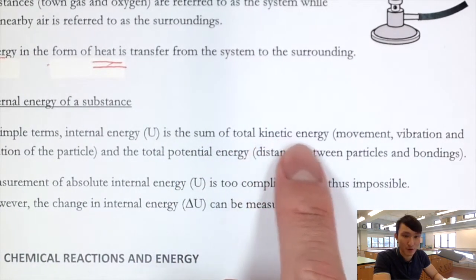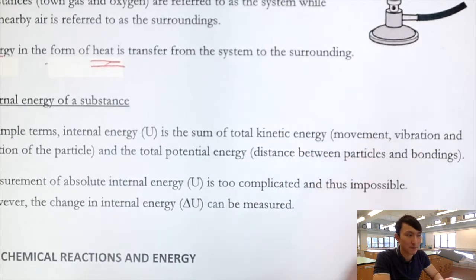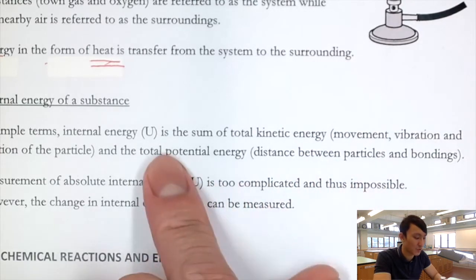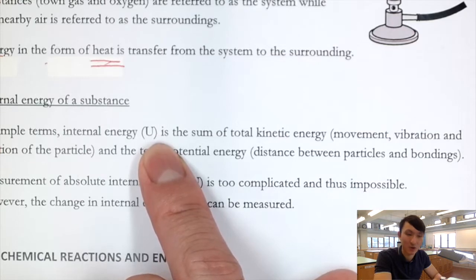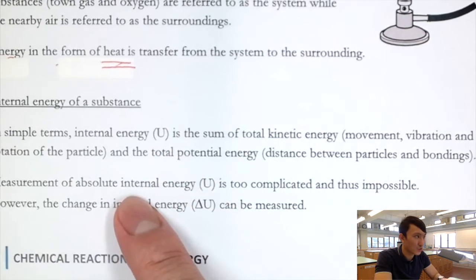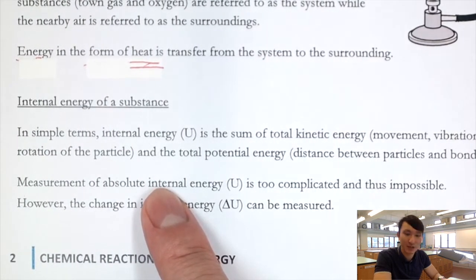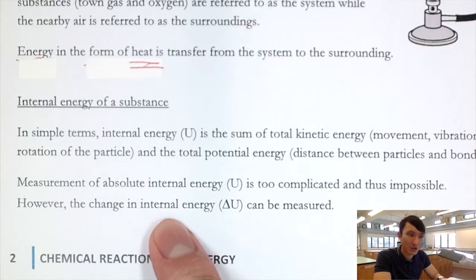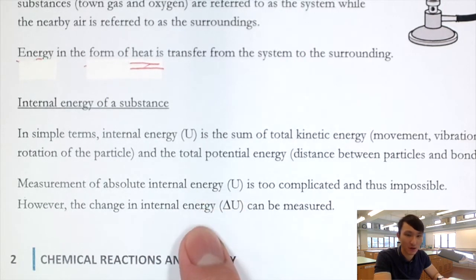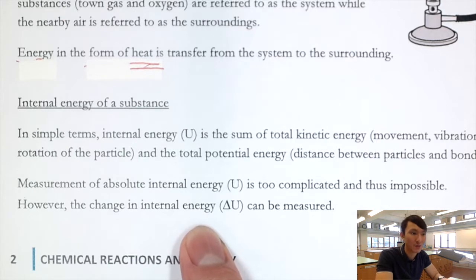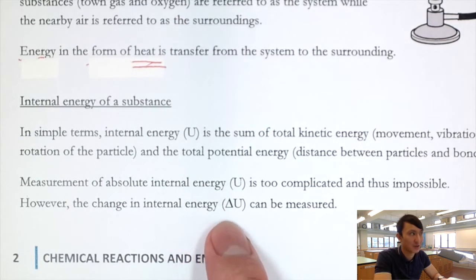Even though we know what we are looking for, it is very difficult or almost impossible to directly determine the total internal energy of a molecule because it is too complicated. Therefore, we are not interested in the absolute internal energy. Rather, we are interested in the change in internal energy, because as the internal energy changes, it changes in the form of heat — allowing us to know how much heat a process releases or absorbs.